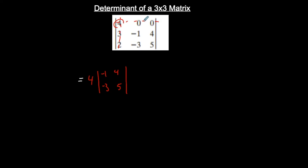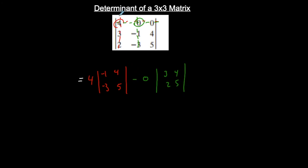Next, going across row one, we take the next element. This row and column cancel, leaving the matrix [0, 3; 2, 4] with a minus sign. Then the pattern is: plus the first element times its leftover determinant matrix, minus the second element times the determinant of its leftover matrix — here [3, 2; 4, 5].